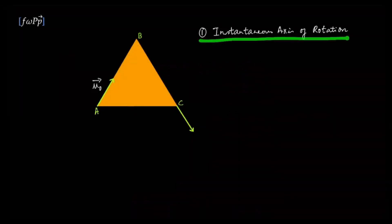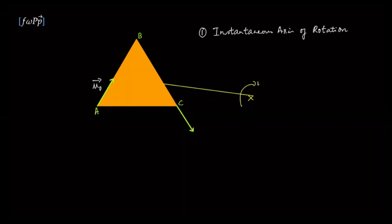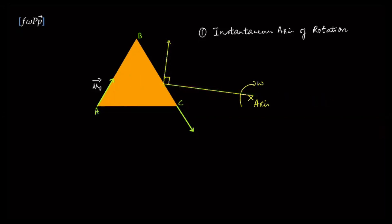Let's look at the instantaneous axis of rotation. If this object rotates about some axis through this plane, then any point on the object can only have a velocity perpendicular to the vector from the instantaneous axis to that point. Conversely, if we know the direction of a velocity, we draw a line perpendicular to it, and the axis lies somewhere on that line. For vertex A, the velocity is along a known direction, so the axis lies along the perpendicular, extending on either side.